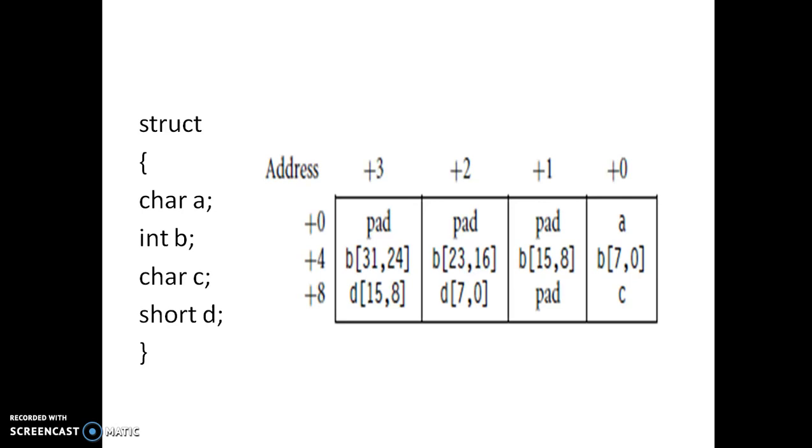Now here we have a clumsy situation. We need to store the char variable c, another character variable. That talks about once it is done with the a variable with 8 bits and b variable with 32 bits, and again c variable starts with another 8 bits. So here we need to follow the concept called padding.